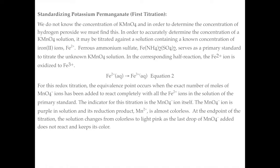In the corresponding half-reaction, the iron ion is oxidized to iron 3+. For this redox titration, the equivalence point occurs when the exact number of moles of permanganate ions has been added to react completely with the iron 2+ ions in the primary standard solution. The indicator for this titration is the permanganate ion itself. The permanganate ion is purple in solution, and its reduction product, the manganese ion, is almost colorless. At the end point of the titration, the solution changes from colorless to light pink, as the last drop of permanganate added does not react and keeps its color.